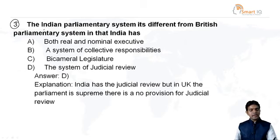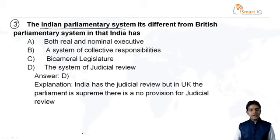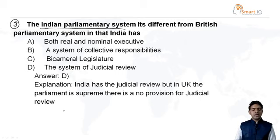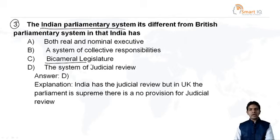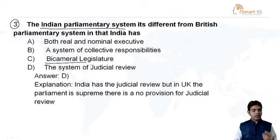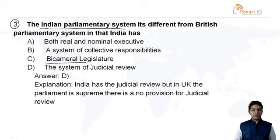The third question: the Indian parliamentary system is different from the British parliamentary system in that India has — Option A: both real and nominal executive, Option B: the system of collective responsibility, Option C: bicameral legislature, Option D: the system of judicial review. The answer is Option D — the system of judicial review.